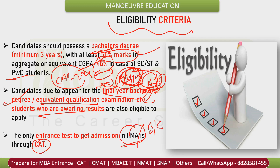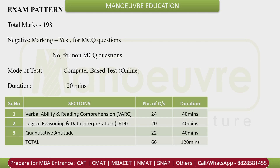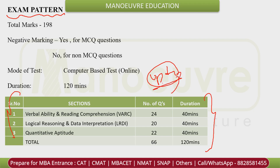Everyone targets IIM Ahmedabad, Bangalore, Kolkata, and other top IIMs, then other top B-schools. If your CAT video score is good you will get into these colleges. The paper is overall 198 marks with two types of questions: MCQ and non-MCQ.